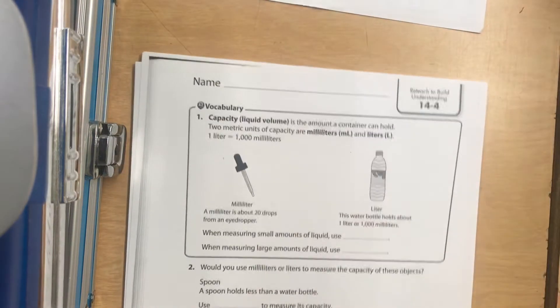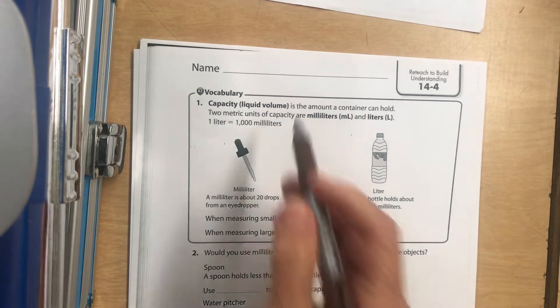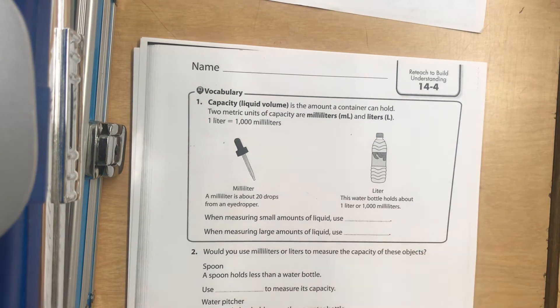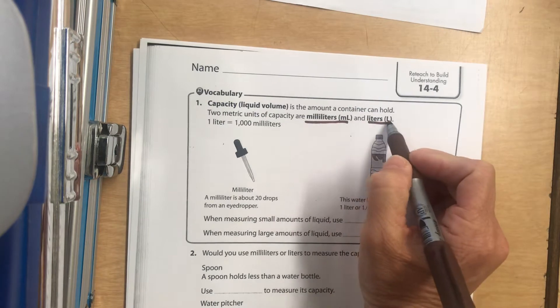So capacity is the amount of liquid volume that a container can hold. What we're going to look at today are milliliters and liters.